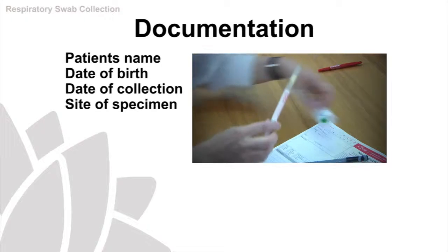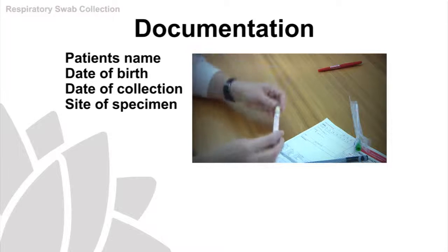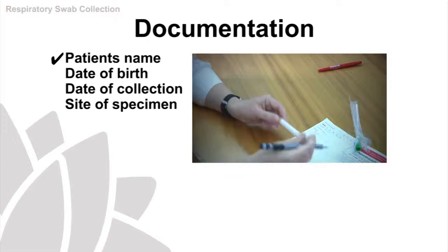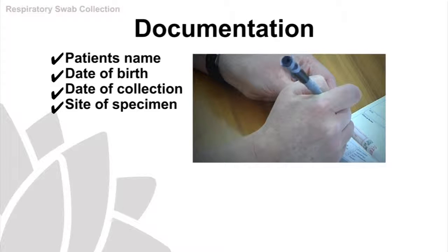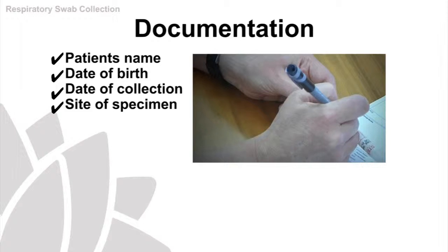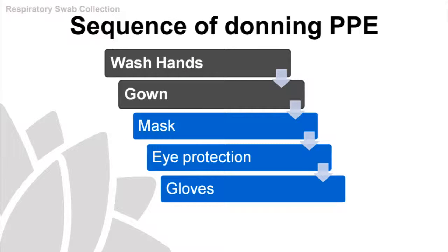You'll also need to label two viral transport tubes with the patient's name, date of birth, date of collection, and site of specimen. Next, you'll need to put on personal protective equipment, commonly referred to as PPE, as defined in the guidelines for the particular respiratory virus. This is an important step in the process. If you are unfamiliar with using PPE, consult an infection control expert and practice prior to collecting any specimens.